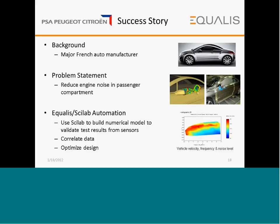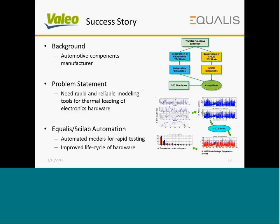Here are a few case studies. Peugeot, a major French auto manufacturer, came to us with a mission to reduce engine noise in the passenger compartment. Equalist-SciLab automation resulted in using SciLab to build numerical models to validate test results from sensors, correlate data, and optimize design. In another automotive case, Valeo, a major automotive components manufacturer, needed rapid and reliable modeling tools for thermal loading of electronics hardware. Equalist automation helped automate models for rapid testing and improve the lifecycle of hardware.